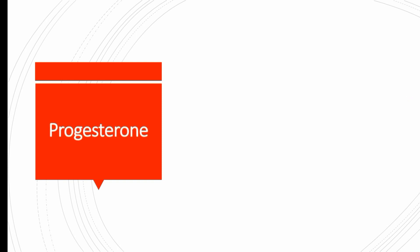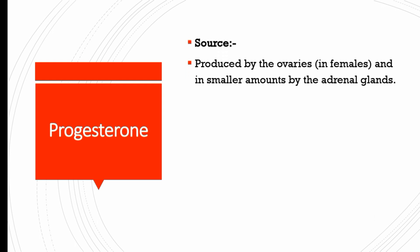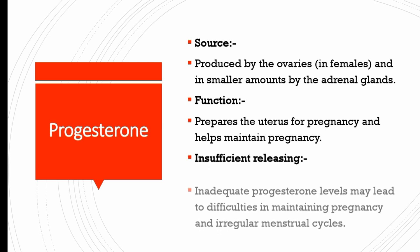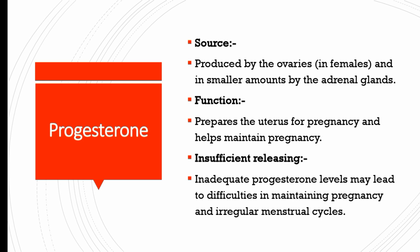Progesterone is produced by the ovaries in females and in small amounts by the adrenal glands. Its function is to prepare the uterus for pregnancy and help maintain pregnancy. Insufficient progesterone levels may lead to difficulties in maintaining pregnancy and irregular menstrual cycles.